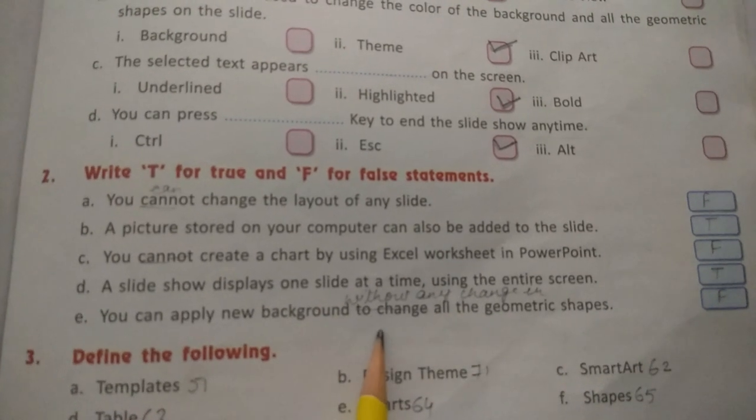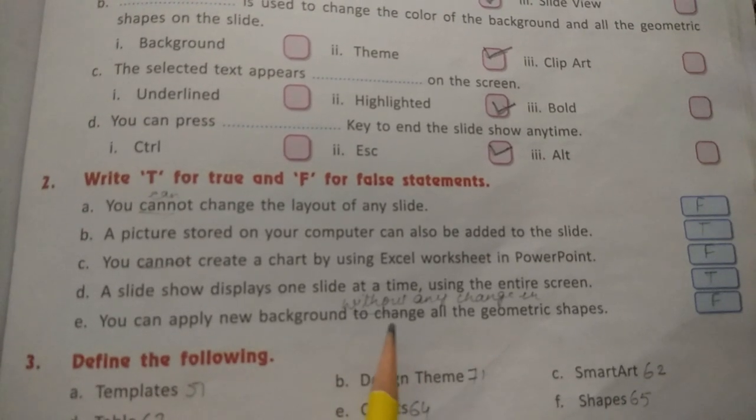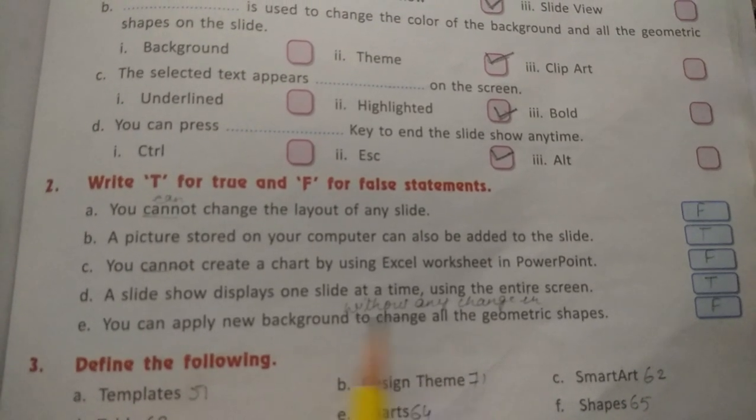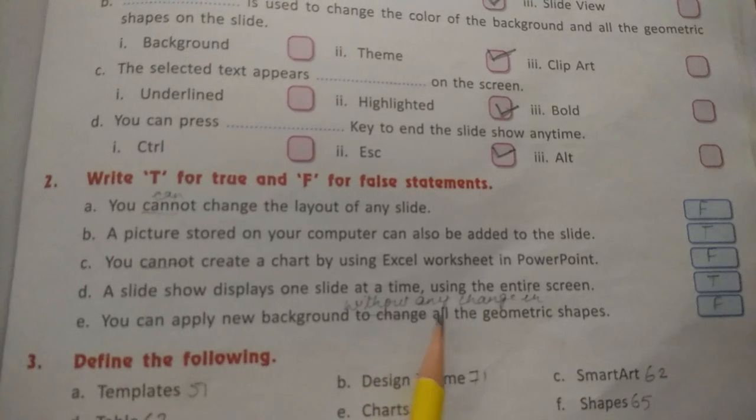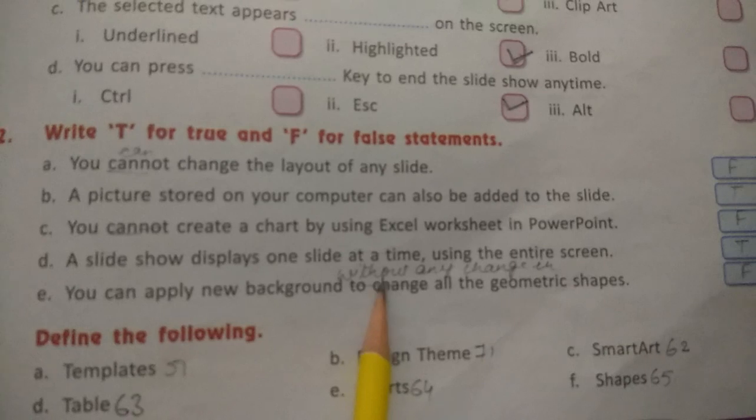Write down without any change. Now take out page number 72, exercise number four, fill up the blanks. Number one: dash provides a quick way to create a new PowerPoint presentation.